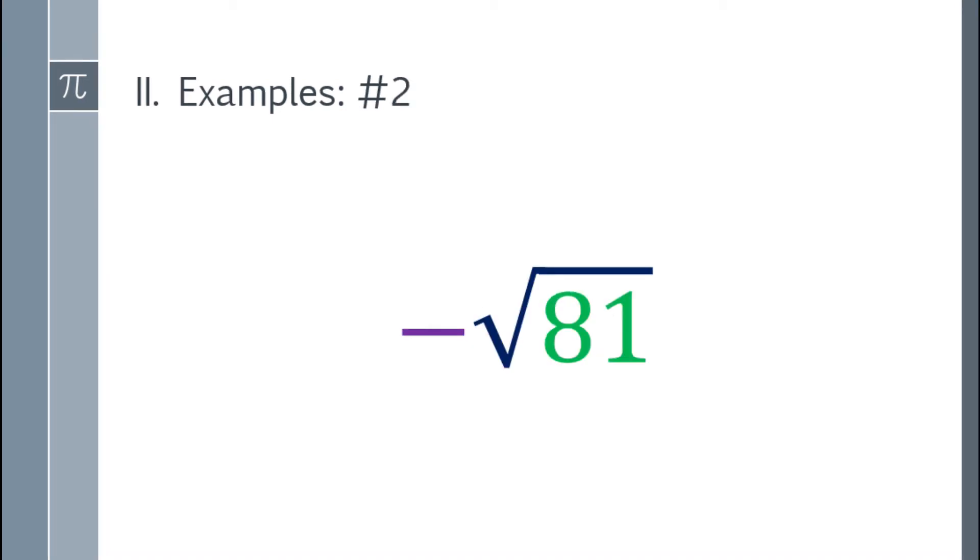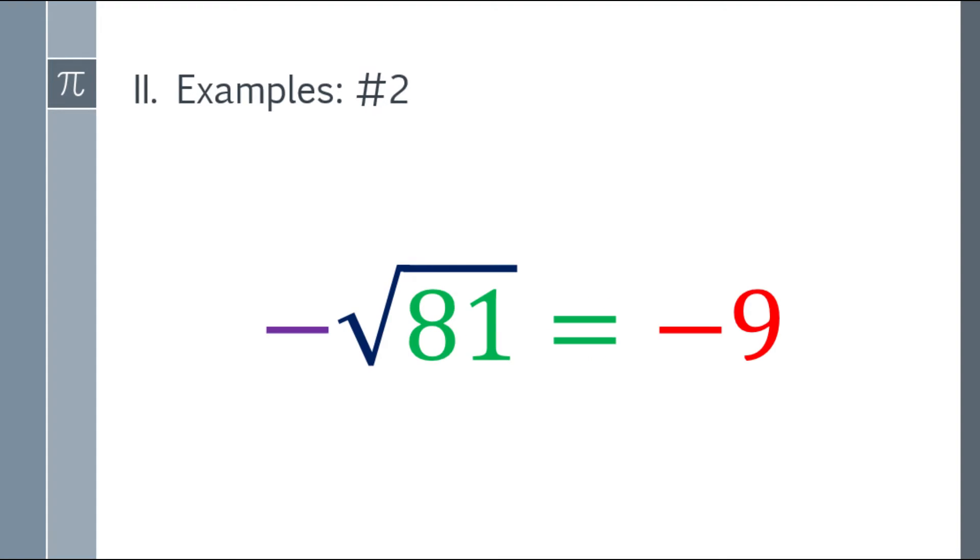Okay, so paano naman kung negative tapos square root of 81? So pag ganyan, kung naman yung square root ng 81, that will be 9. Tapos dun mo ilagay ang negative sign. So the final answer will be negative 9.